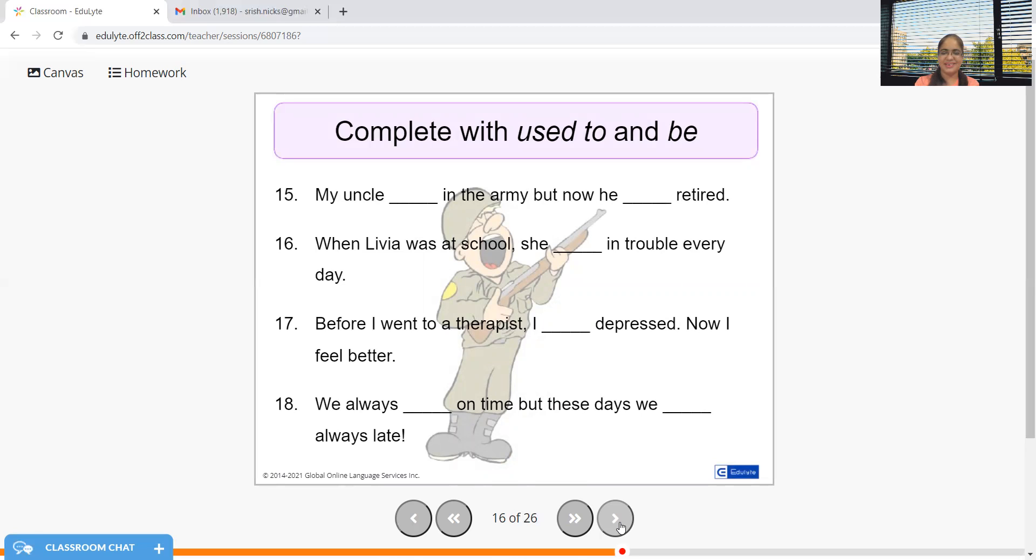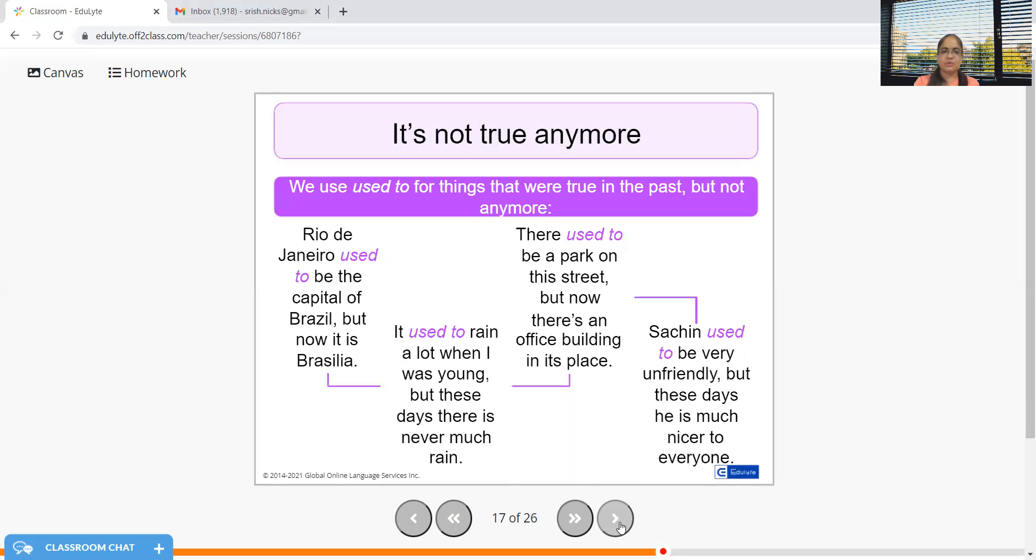When Livia was at school she used to be in trouble every day. Before I went to a therapist I was depressed, I used to be depressed, now I'm better. We always need to be on time, we always are on time, or maybe we always were on time, but these days we are always late. We use 'used to' for things that were true in the past but not anymore.